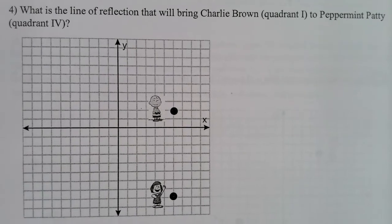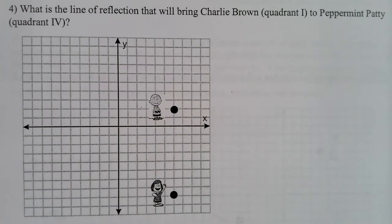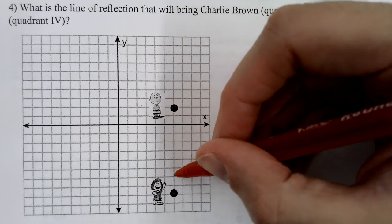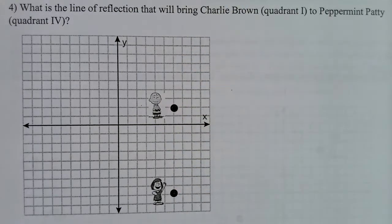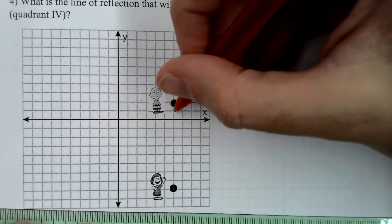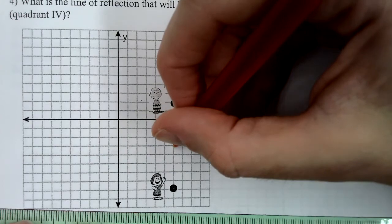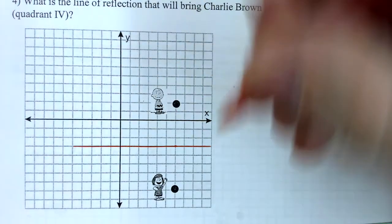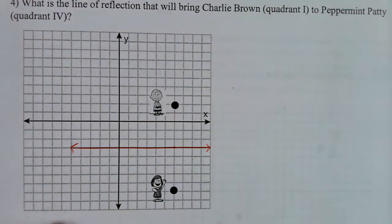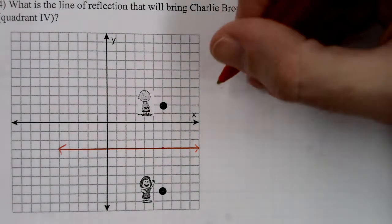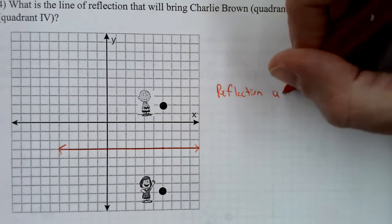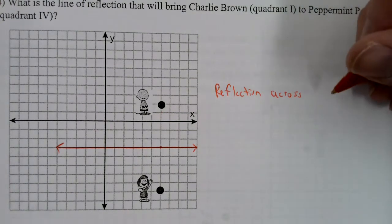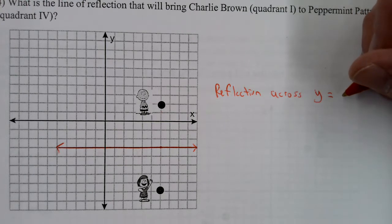Number four: what is the line of reflection that will bring Charlie Brown in quadrant one to Peppermint Patty in quadrant four? They are 10 apart, so I count five away from Charlie Brown — one, two, three, four, five — right there. Charlie Brown is five above that line and Peppermint Patty is five below it. Whenever you have a horizontal line, it is Y equals a number, so this is a reflection across the line Y equals negative three.